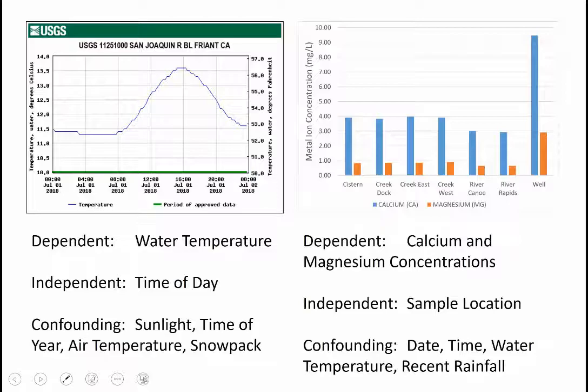The independent variable is that sample location: cistern, creek dock, creek east, creek west, river canoe, river rapids, or well.